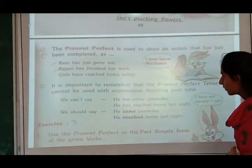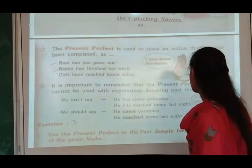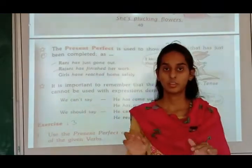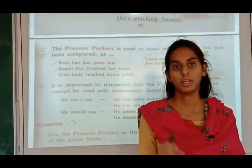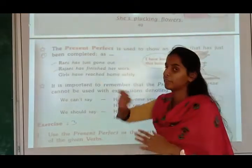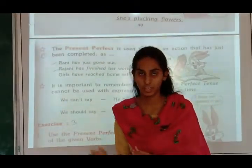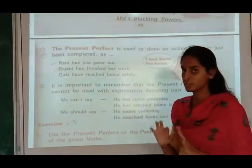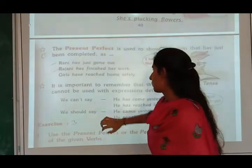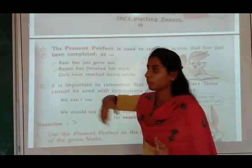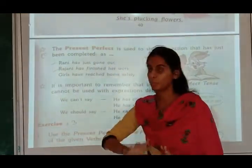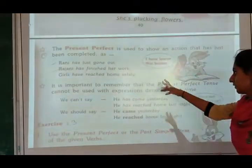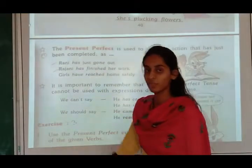The present perfect is used to show an action that has just been completed. In present perfect, has or have is used and the third form of verb. 'Rani has just gone out' — has is used and gone is the third form of go. 'Girls have reached home safely' — have and the third form of verb reached.